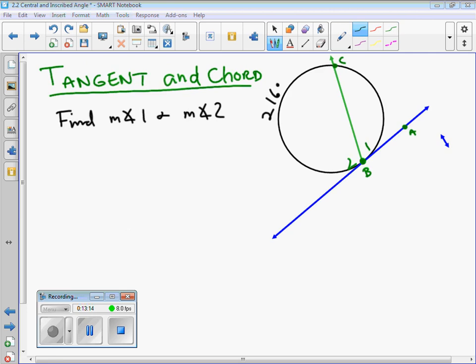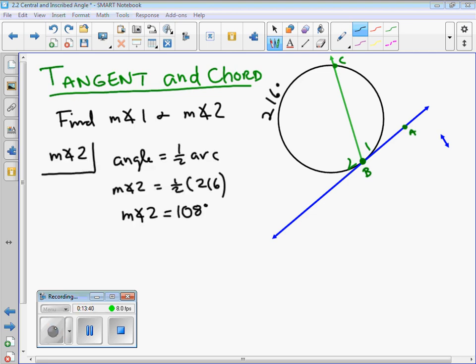Okay. How about this problem? This is a tangent chord problem. And again, I like to just look at these as an inscribed angle. It's not an inscribed angle by definition, but it is basically a angle whose vertex is on the circle. And so very similarly done as the previous problem. So it's asking me to find angle one and two. So go ahead and see if you can figure out a way to do that, put me on pause, check your work, and then come back and see me.